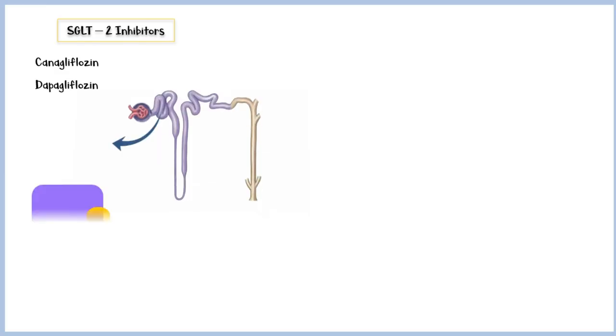The last class of medications in non-insulin secretagogues are sodium glucose co-transporter 2 or SGLT2 inhibitors. They include canagliflozin and dapagliflozin. SGLT2s are located in the proximal convoluted tubules of the nephron and are responsible for about 90% of the glucose reabsorption. By inhibiting these transporters, these drugs significantly reduce the glucose reabsorption and promote glycosuria.